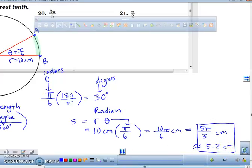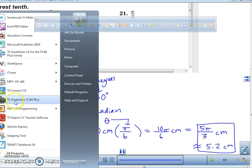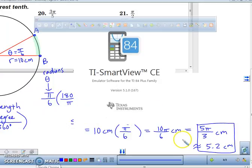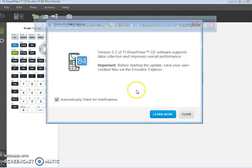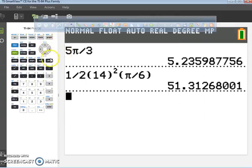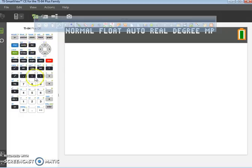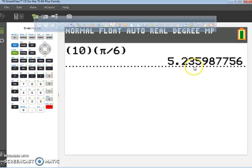If I were to go to the calculator, go to my calculator right here, I can find it. Alright, turn it into my calculator, I'm going to clear this out. And just do my radius, which was what? 10. Times my theta, which was pi over 6. Press enter. And my approximate value is 5.2 centimeters.